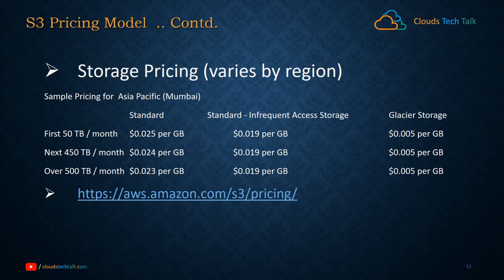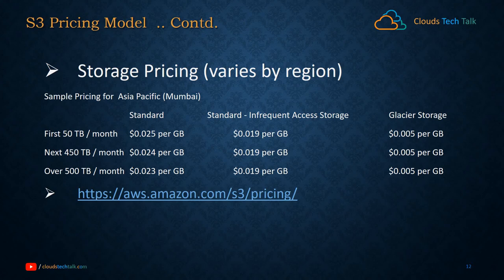Continuing with the pricing model, here are examples for standard storage type pricing. For the first 50 terabytes, it is $0.025 per GB — which is really cheap. For the next 450 terabytes, it is slightly less at $0.024 per GB. Over 500 terabytes, it is further reduced to $0.023 per GB. Standard IA is around 20–25% cheaper than standard. Glacier pricing is almost one-fifth of standard pricing — really, really cheap for data archival. You can visit aws.amazon.com/s3/pricing for the full pricing details.